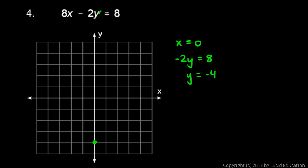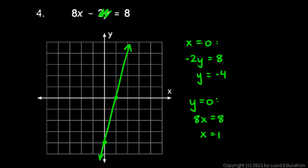And then if I let y equals zero, then I have 8x equals eight. So x has to be one. So there's my x-intercept. So then you have the x-intercept and the y-intercept, and that's enough. And you can draw on the line.